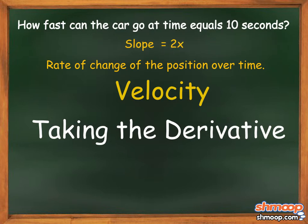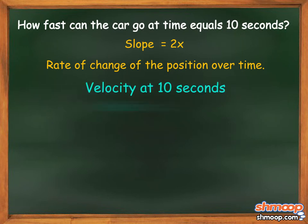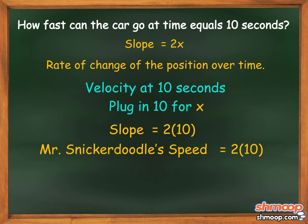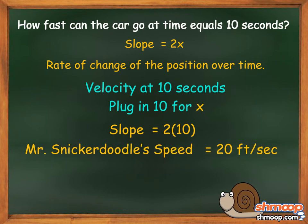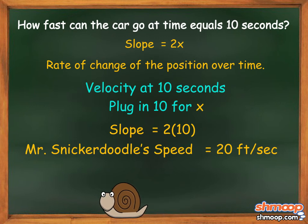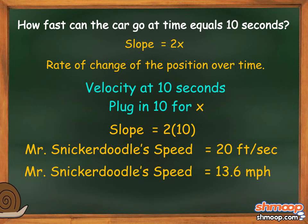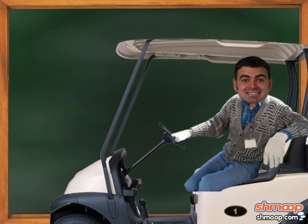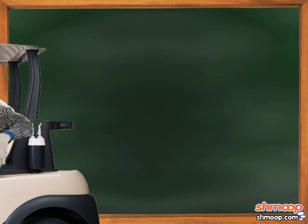Back to Mr. Snickerdoodle. To find the velocity at 10 seconds, we just plug in 10 for x into 2x to find that Mr. Snickerdoodle's speed is 2 times 10, or 20 feet per second. For those of you not familiar with feet and seconds, he's going a blazing 13.6 miles per hour. His race car driving dreams are finally fulfilled.